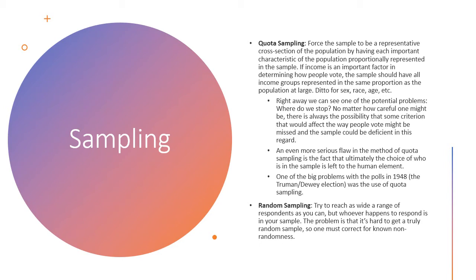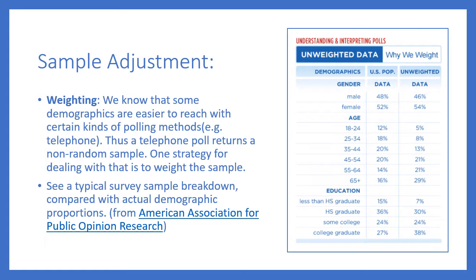It's really hard to get a truly random sample, so sometimes you end up doing the best you can and then correcting after the fact for known non-randomness in your sample. One very common kind of sample adjustment is called weighting. We know that some demographics are easier to reach with certain polling methods — for example, a telephone call — than others. So a telephone poll will tend to return a non-random sample, and one strategy for dealing with that is to weight the sample.